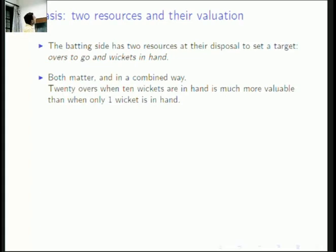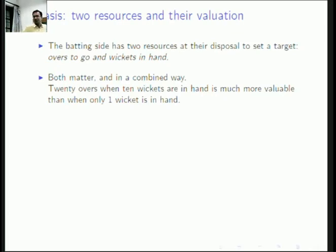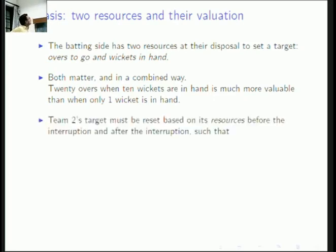Both overs and wickets matter in some combined way — we need to figure out in what way. For example, 20 overs when 10 wickets are in hand is much more valuable than when you have only one wicket in hand. If you have only one wicket, chances are you'll get out very soon. Team 2's target must be reset based on the resources it has before and after the interruption.